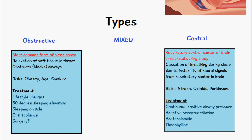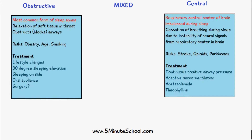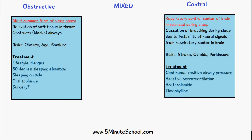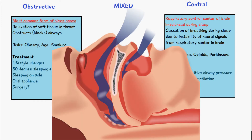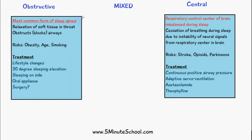There are three different types of sleep apnea: obstructive, central, and mixed, which is a combination of the two. Obstructive sleep apnea is the most common form. It's where we have the relaxation of the soft tissues in the throat — when you're lying down, due to several risk factors, the soft tissues in the back of the throat relax and block the airways, as you can see from this diagram.